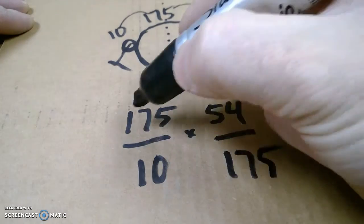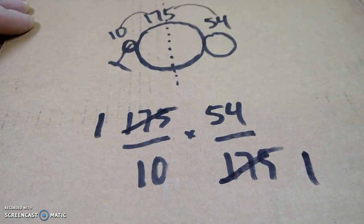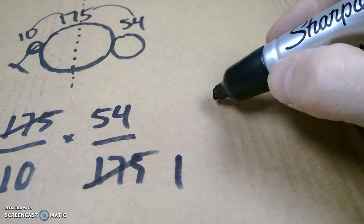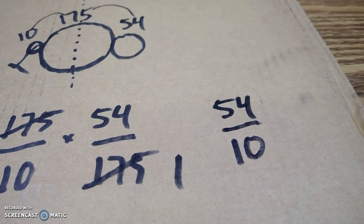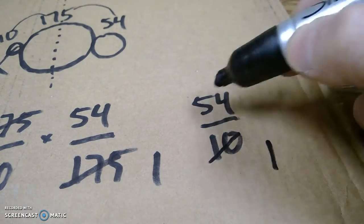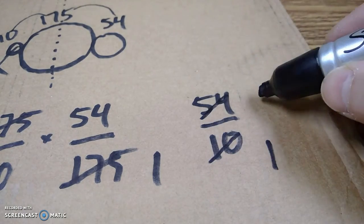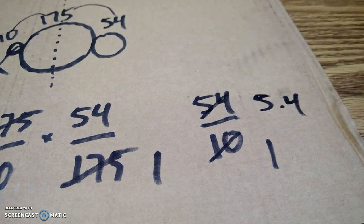What do we do? Well, this divides into that one time. So I'm left with 54 over 10. This could be reduced where 10 goes into 10 one time, 10 goes into 54, 5.4 times, right?